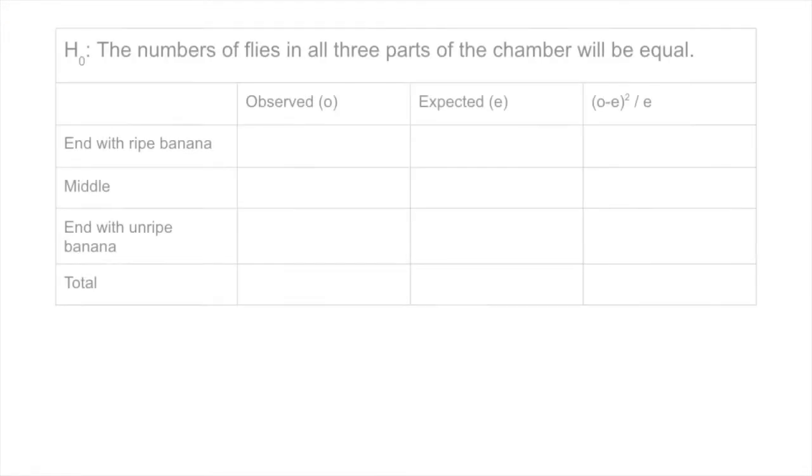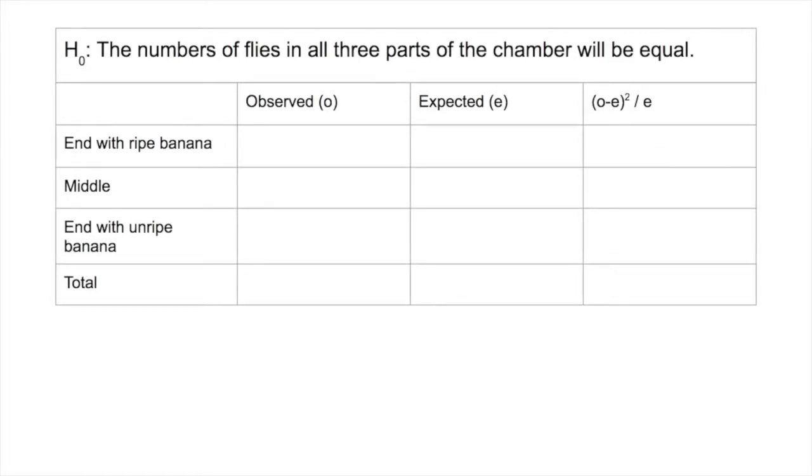So the null hypothesis is going to be what we're trying to disprove. We're going to say that the null hypothesis is the number of flies in all three parts of the chamber are going to be equal. There are 60 flies in total and we expect that there are going to be 20 in each part of the chamber.